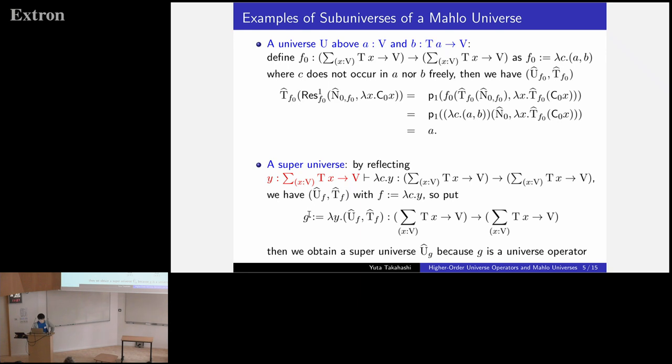And then, we define the universe operator G. This is indeed the universe operator because G takes a family of sets in V and then returns a universe containing it, as we saw above. Then, by reflecting it again, we obtain a superuniverse UG.